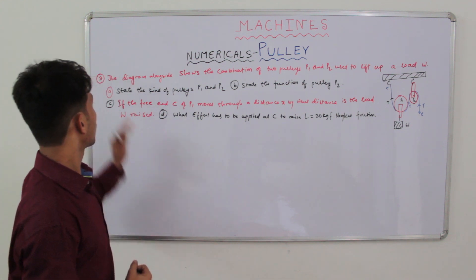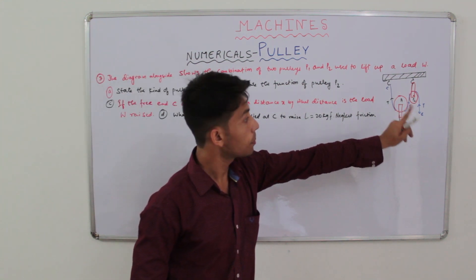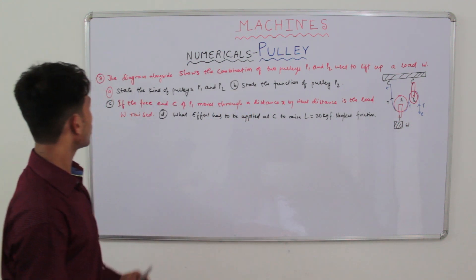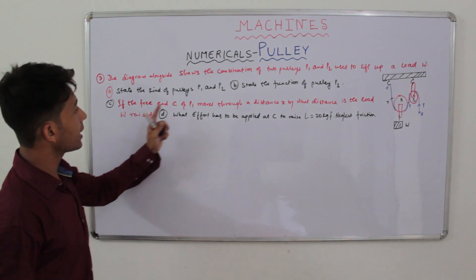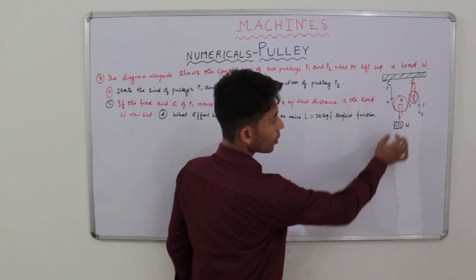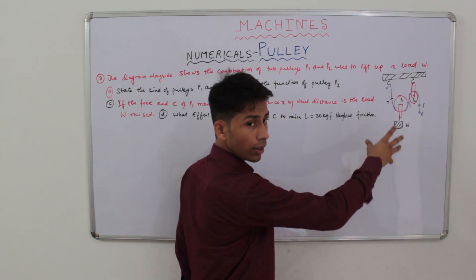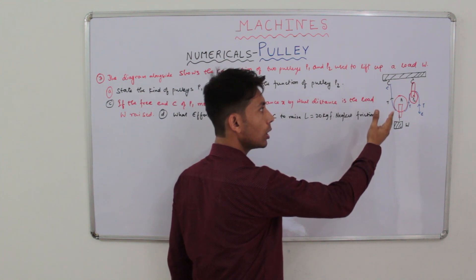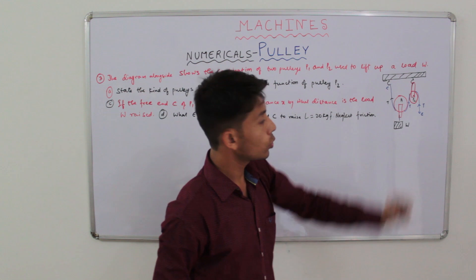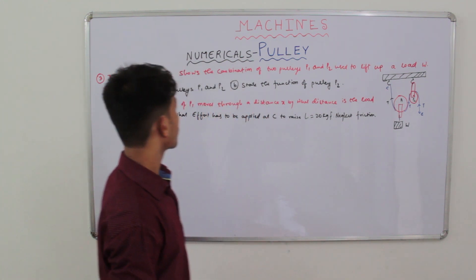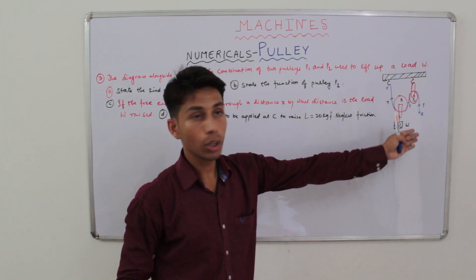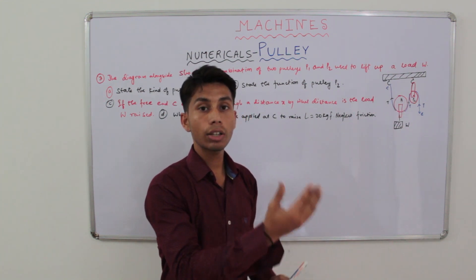After solving two basic problems, let us move on to the third numerical. The diagram shows a combination of two pulleys P1 and P2 used to lift a load W. The first question is to state the kind of pulleys P1 and P2. Based on the axle, since the axle of P1 is free, P1 is a single movable pulley, whereas the axle of P2 is fixed to a rigid support, so P2 is a single fixed pulley. The function of pulley P2 is to change the direction of effort.